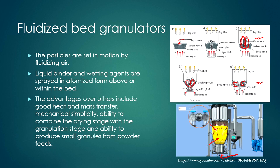The efficiency of the fluidized bed granulator for making granules depends on flow pattern, flow rate, particle characteristics, binding liquid concentration, and the distributor through which gas is supplied to make the flow pattern inside the bed.